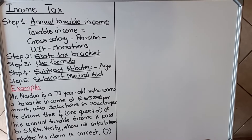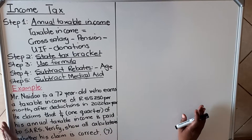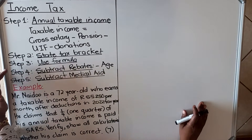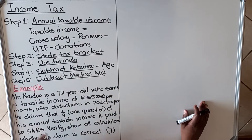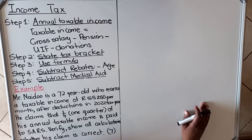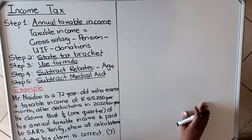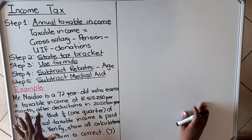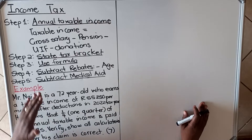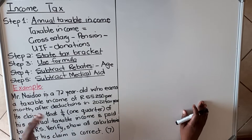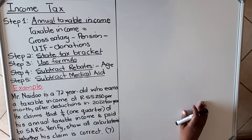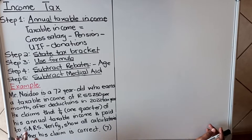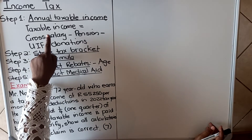This is a lesson on income tax. I've written steps for you to follow when you do a question on income tax, and then I've done an example. With this example I'm going to follow the steps with you and show you how to do it in the exam. The first step is to calculate the annual taxable income.